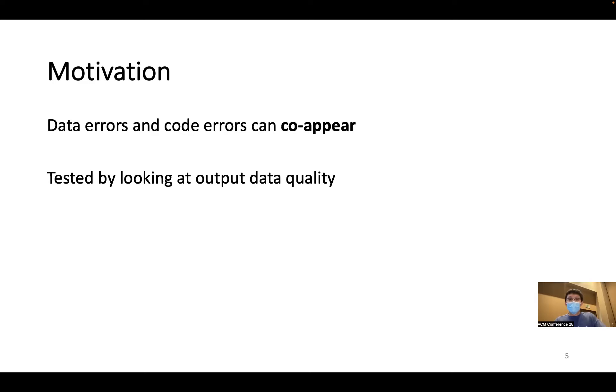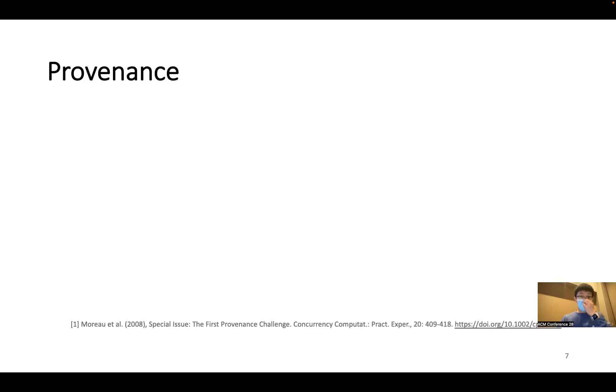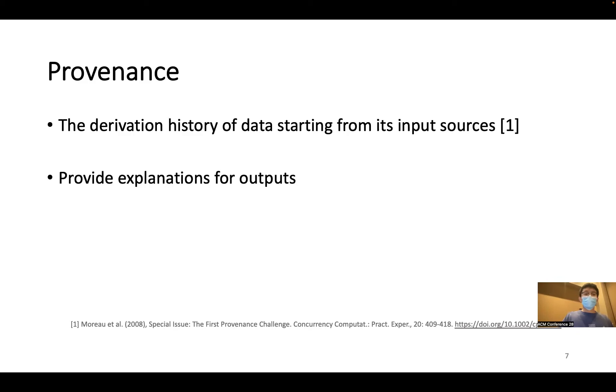In this development cycle, the good news is provenance can be very helpful. So what is provenance? At a high level, it is a derivation history of data from its input sources. And it is supposed to provide explanations for what has happened to the output. Let's understand this better by envisioning what ideal provenance can achieve.